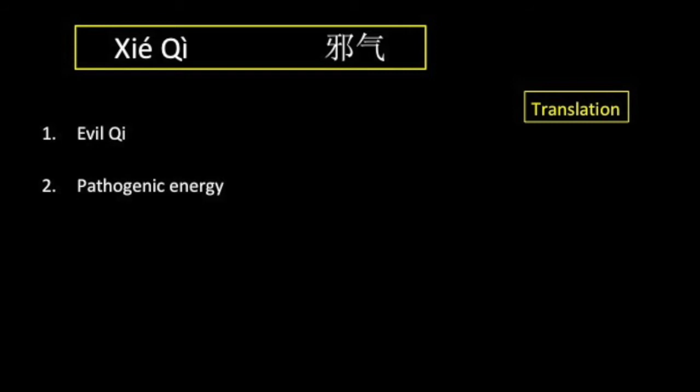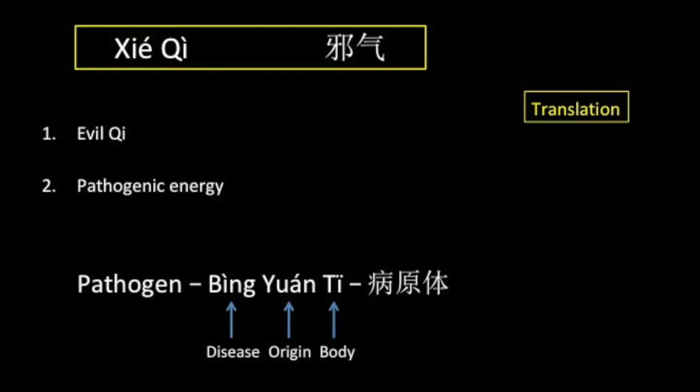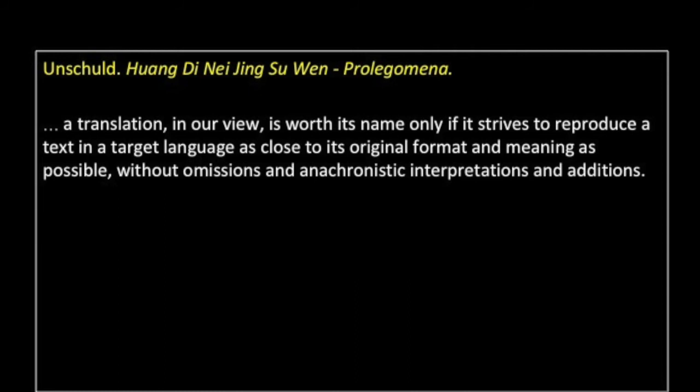Another problem concerns the general style of translation, and this is most evident in the problem of translating the word xie qi into English. We are faced with translating it either using the medieval idea of an evil entering the body, or in the modern sense of a pathogen. Both of these translations pose problems, opening up TCM to criticism. The modern scientific word for a pathogen in Chinese is bingyuan qi.